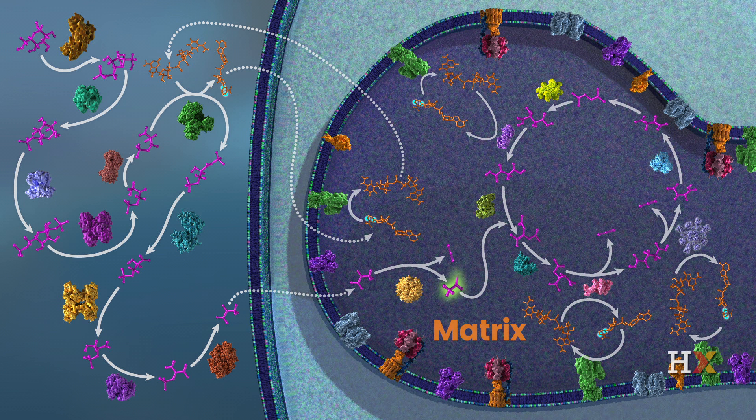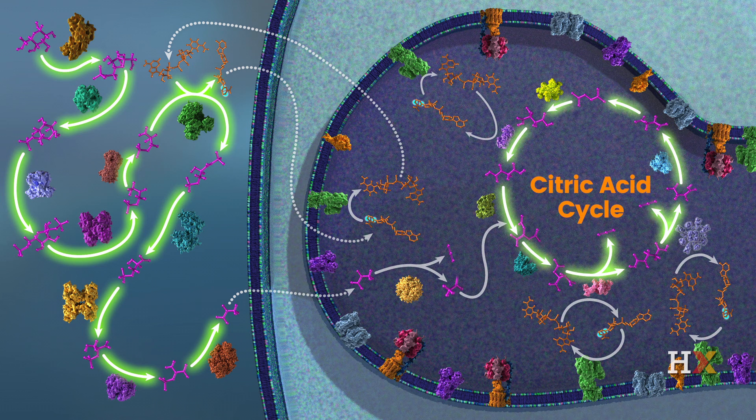Therefore, acetyl CoA is the key metabolic intermediate that links glycolysis and the citric acid cycle.